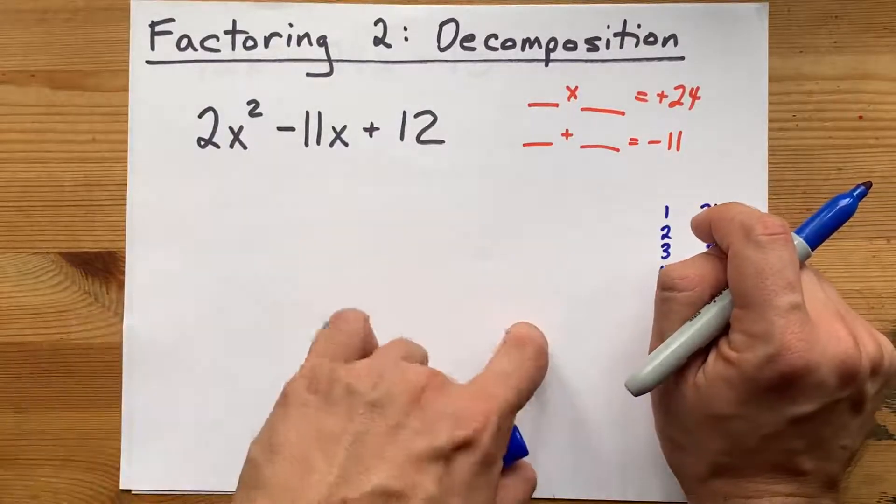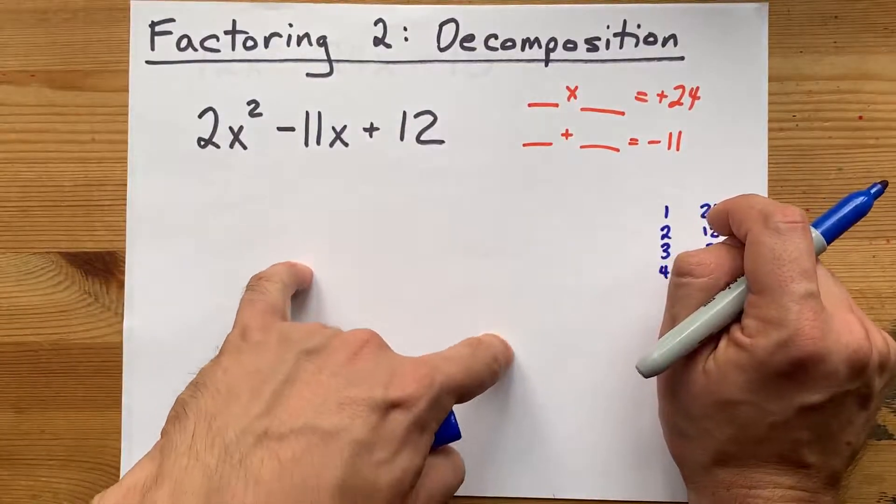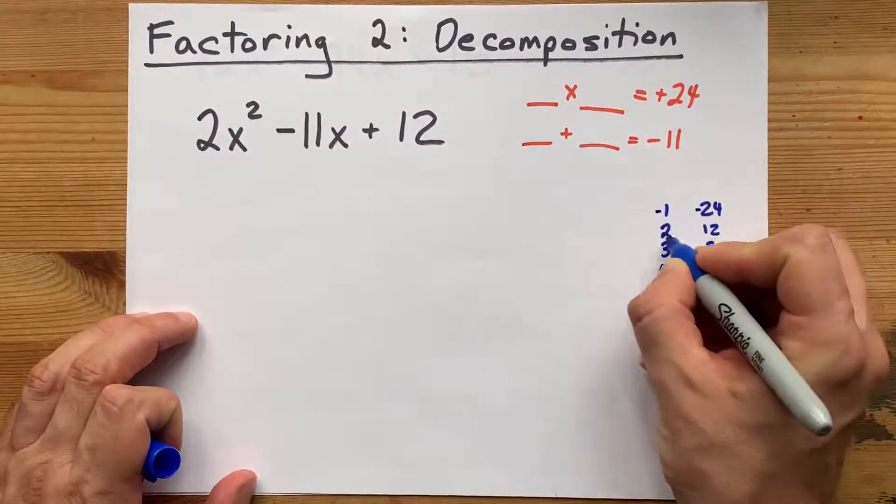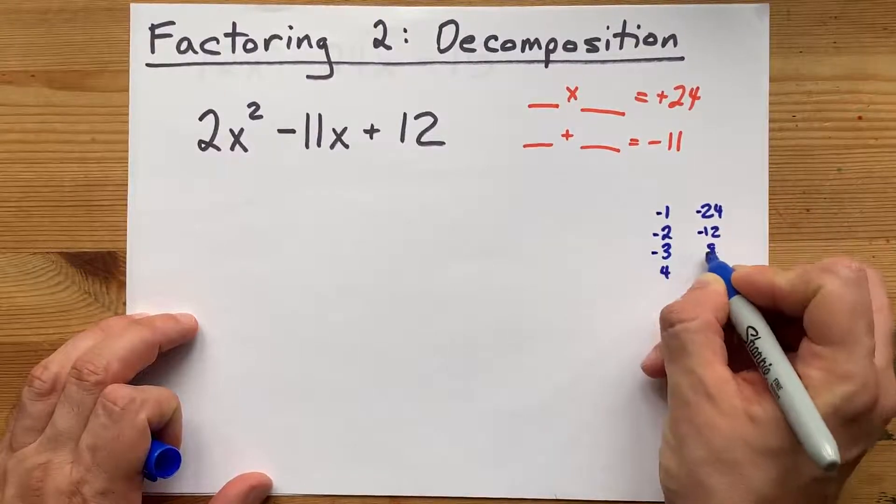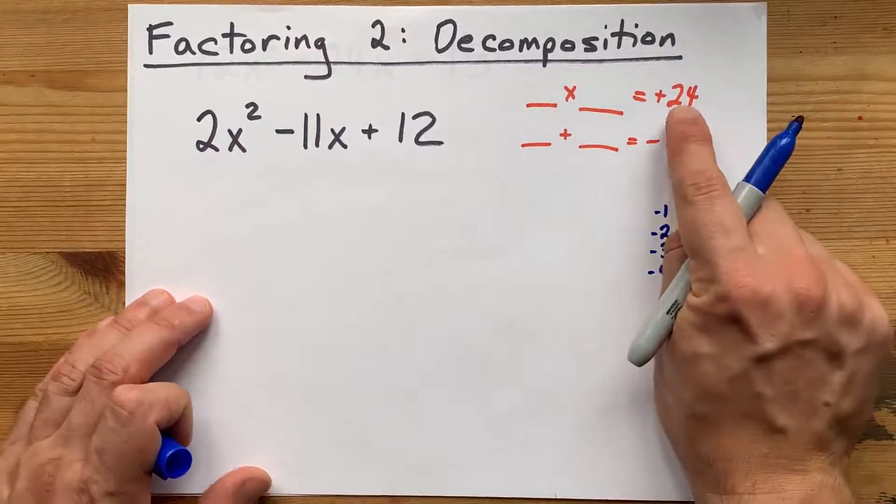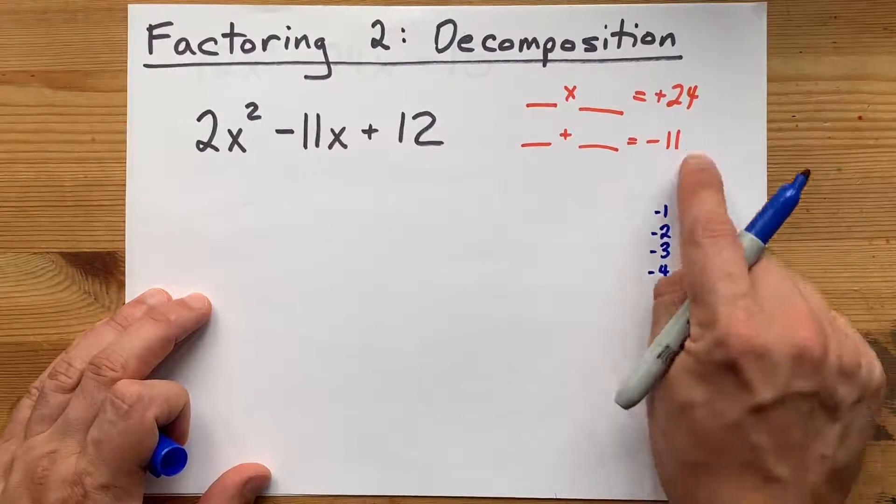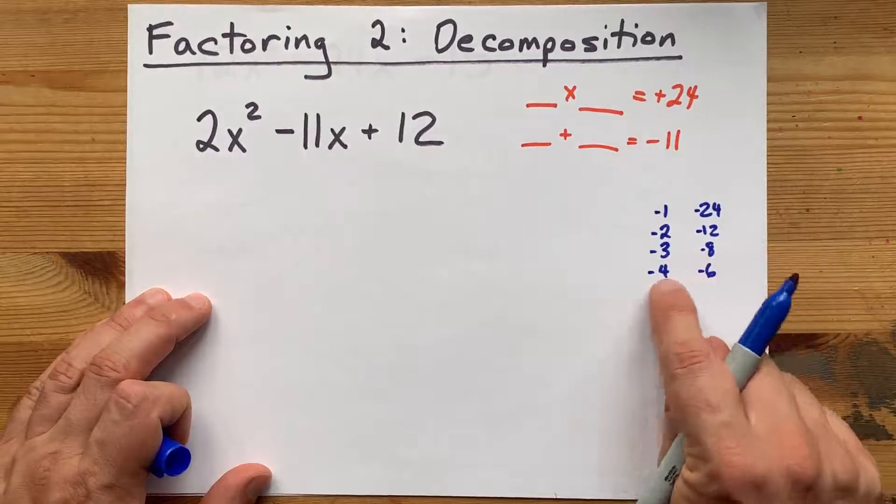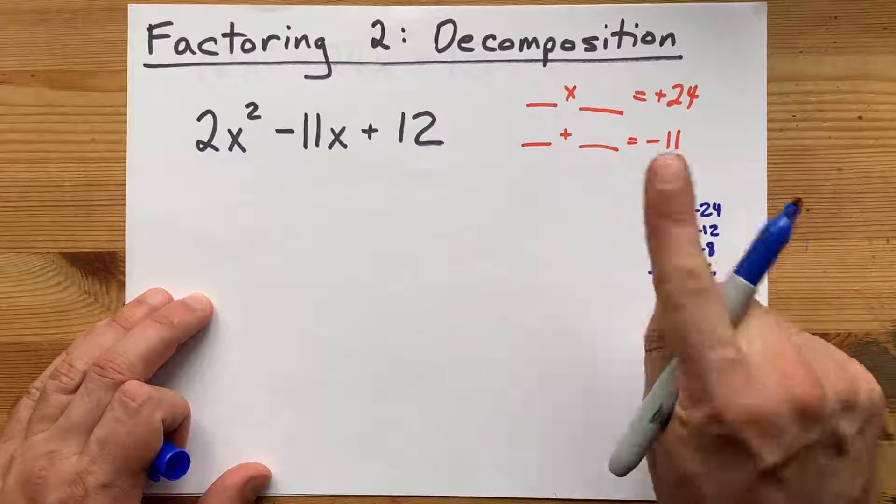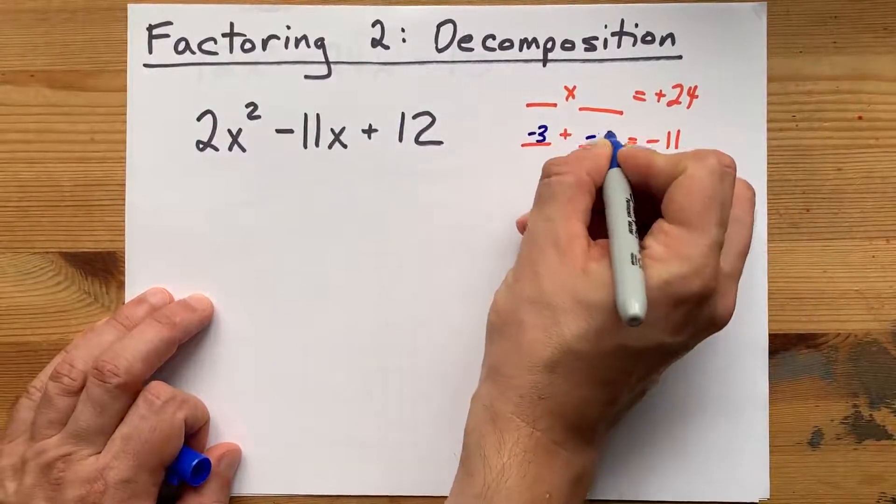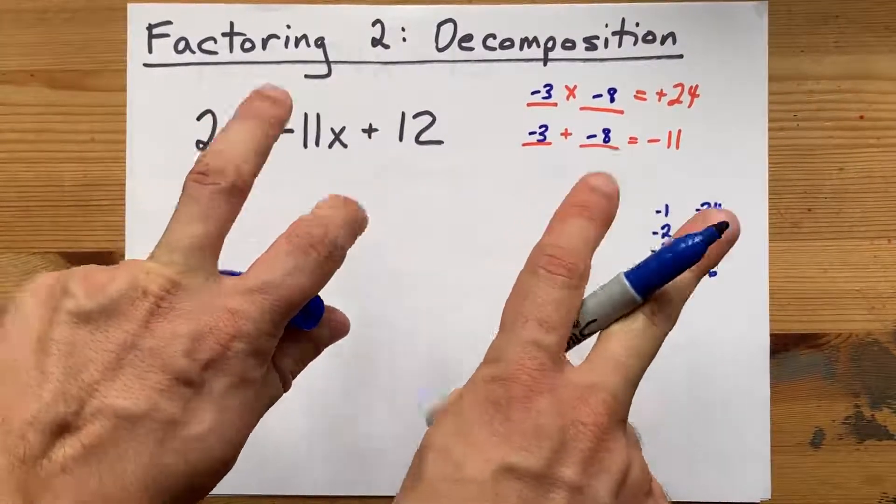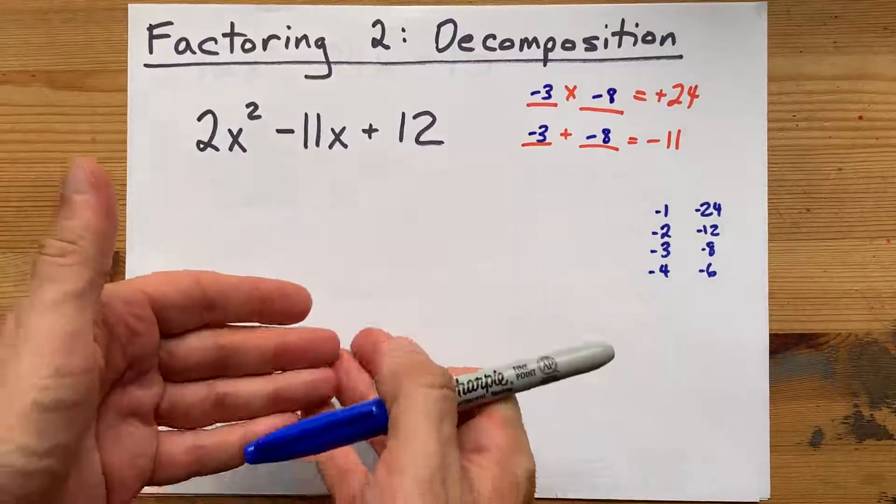But if I have one negative and one positive, they're going to multiply to give me a negative, and that's not what we want. So that means we need to check out all of these pairs, negative 4 and negative 6. Those still multiply to give 24. But do they add to negative 11? No, they don't. They add to negative 10. Negative 3 and negative 8? Ah, those add to give me negative 11. I'm just going to fill it in here so you can verify for yourself that those are the magic numbers we're looking for. It's negative 3 and negative 8.